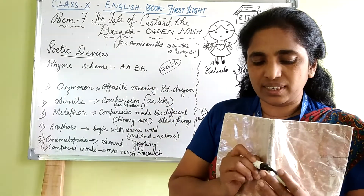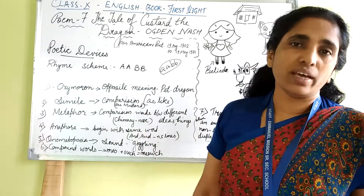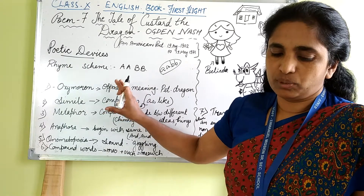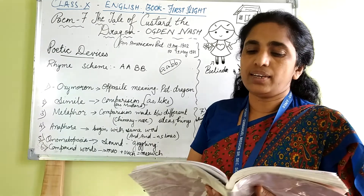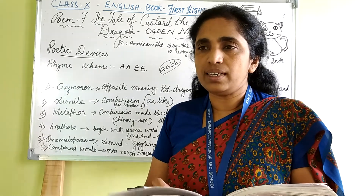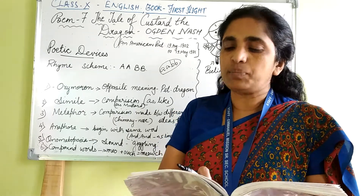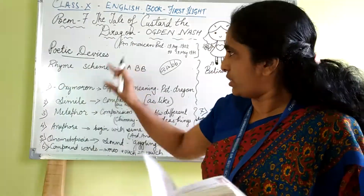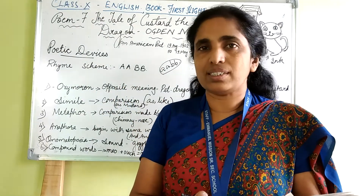Now let us see the poetic devices in this poem. First one is oxymoron. Looking at the first stanza: 'Belinda lived in a little white house with a little black kitten and a little grey mouse.' The word 'little' repeats multiple times — that is called repetition. I didn't write this one as there are many poetic devices to cover.